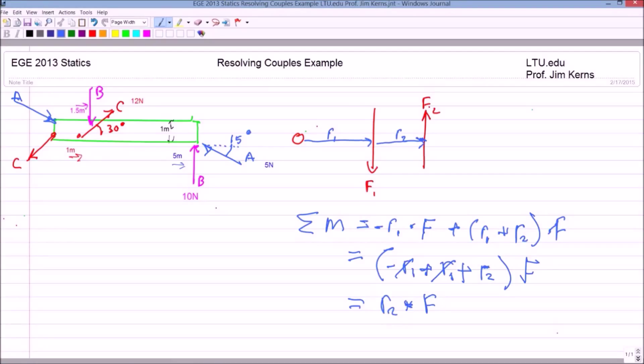Okay, and that's my moment. And you'll notice that no matter where I put this origin, I can move it up and down, I can move it right and left, I can put the origin, my point O anywhere, and I still end up with the moment being simply R2 times F.